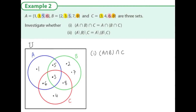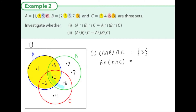We start putting information in — start with the middle always. Three is in all three of them. Five is between A and B, six between A and C, eight is in B and C. Left over: one in A, two and seven in B, and four in C. First question: (A intersection B) intersection C. I shade A intersection B in blue and circle C in yellow. Where they overlap is colored green — that's the element three. And is that the same as A intersection (B intersection C)? Yes — again three is the overlapping element, colored green. So those two are equal.